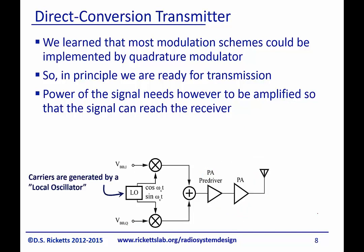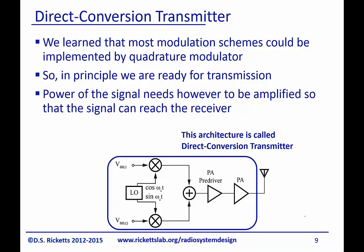We call the oscillator that drives these two quadrature signals the local oscillator. This comes from the fact that it is the oscillator in the radio — it's the local oscillator that up or down converts the signal. This architecture, as simple as it is, is called a direct conversion transmitter, and it is quadrature. Almost all of the digital communication we'll deal with involves a quadrature transmitter. If the input signals were analog, this would just be a direct conversion analog — there's nothing really different between analog and digital from a hardware standpoint.